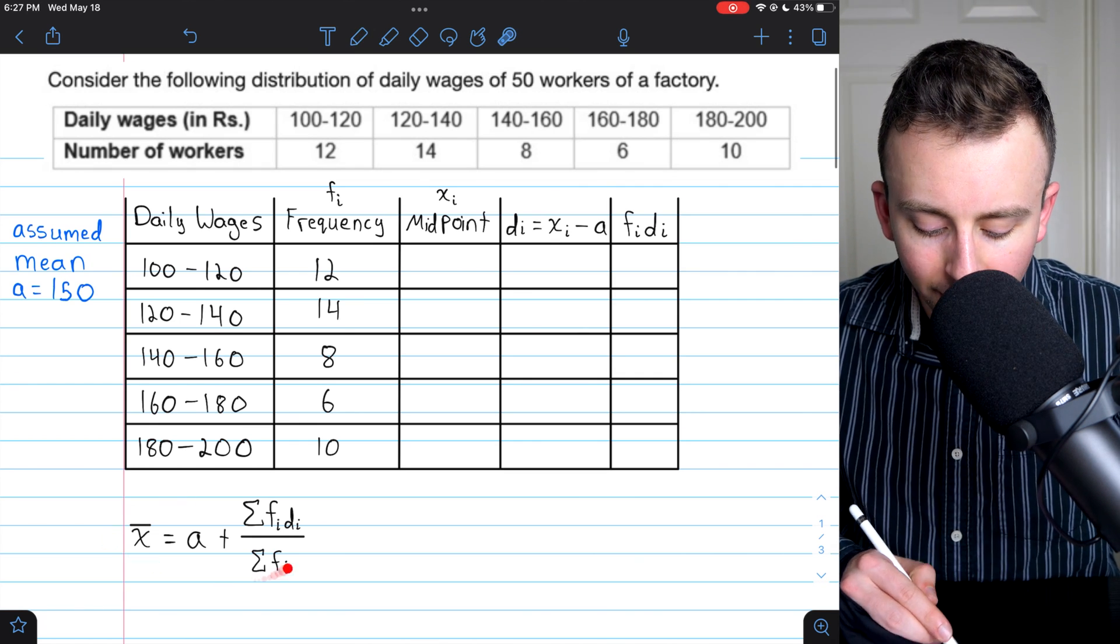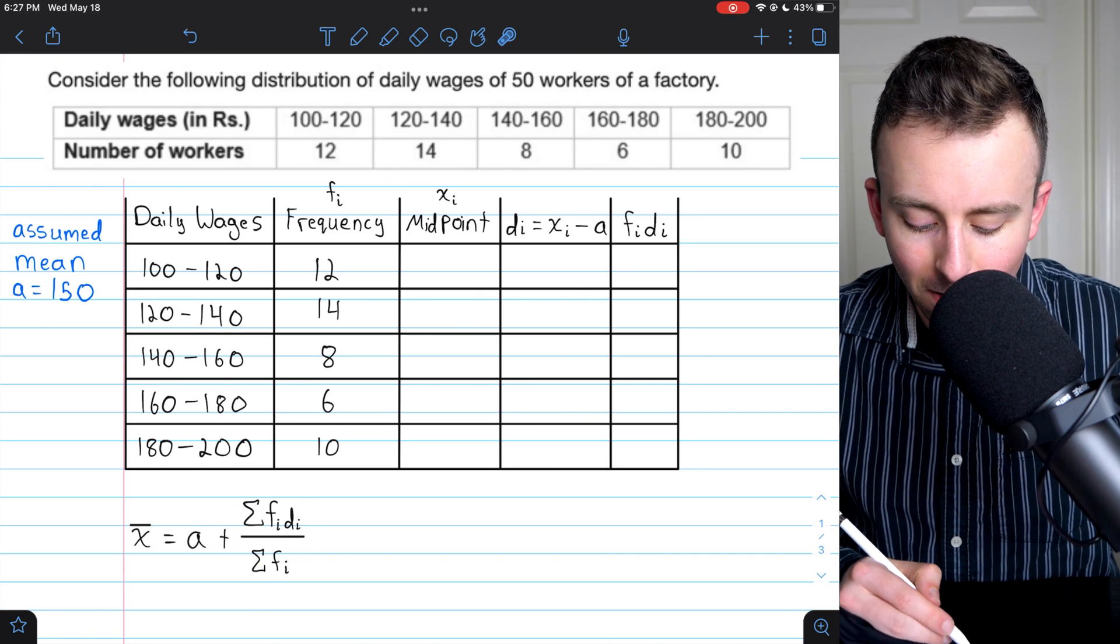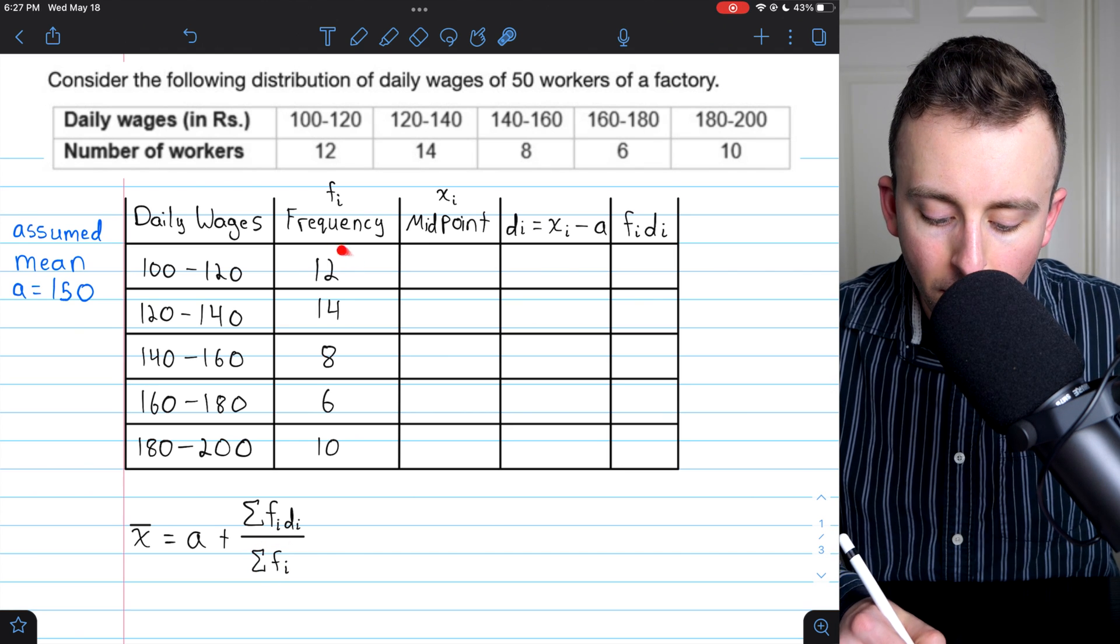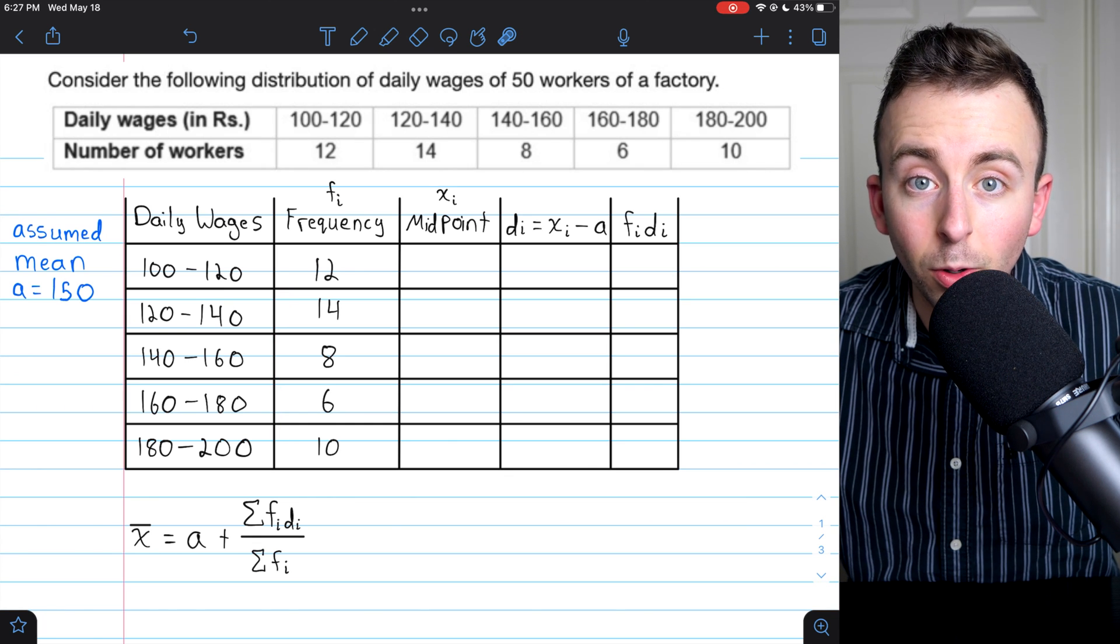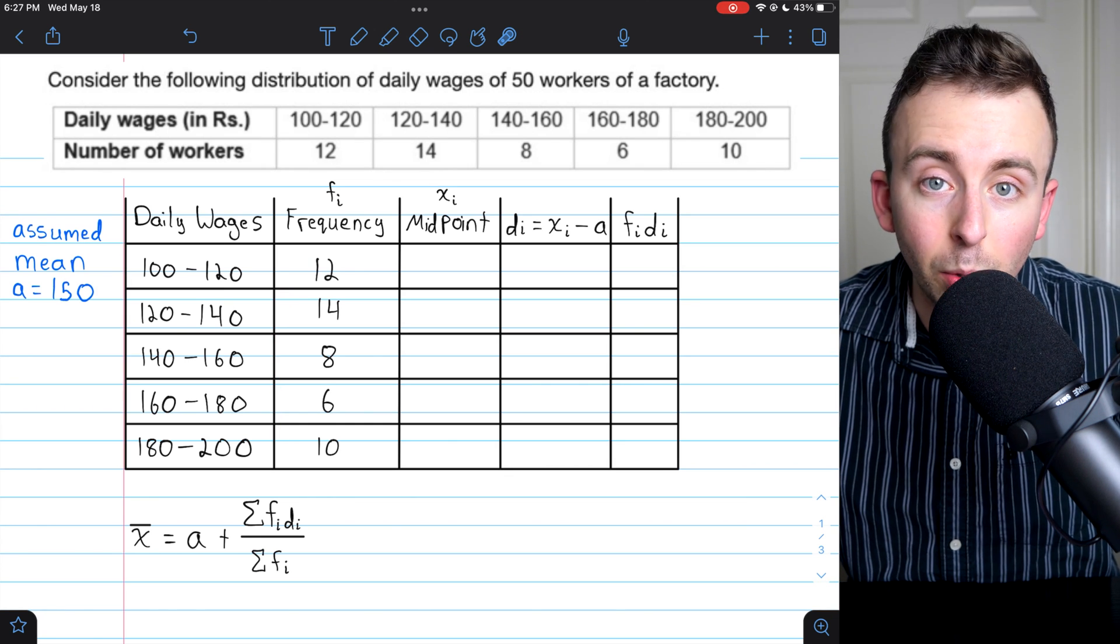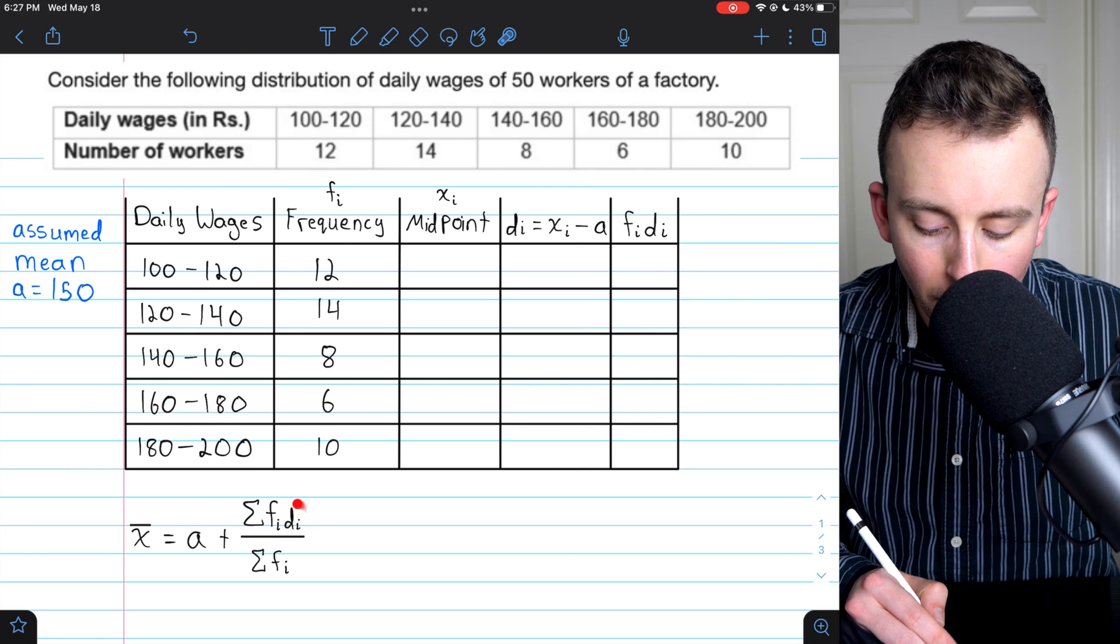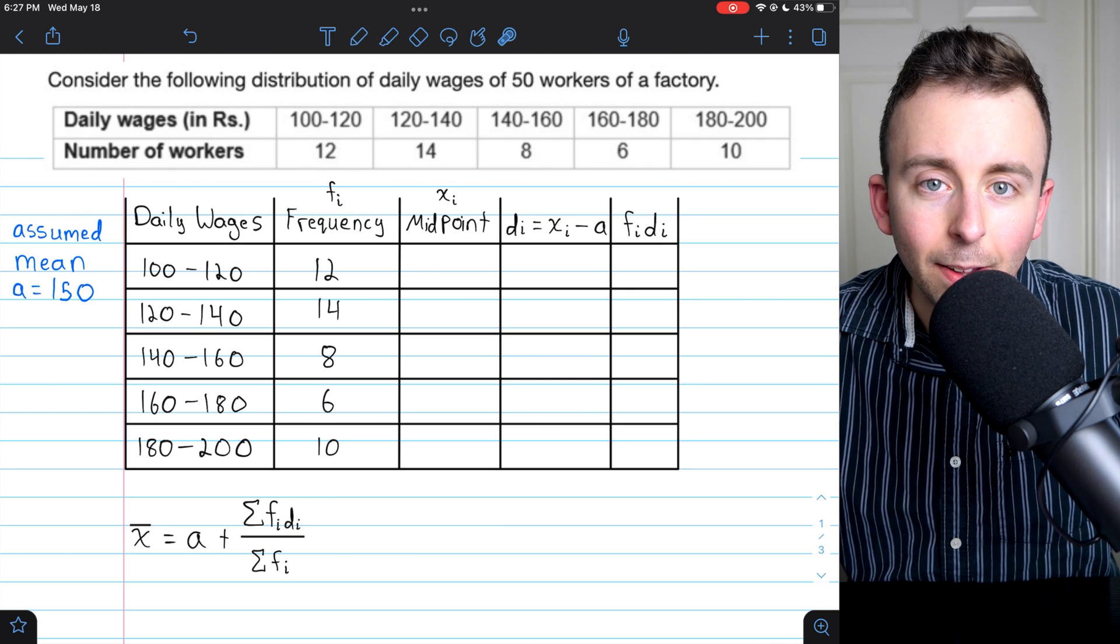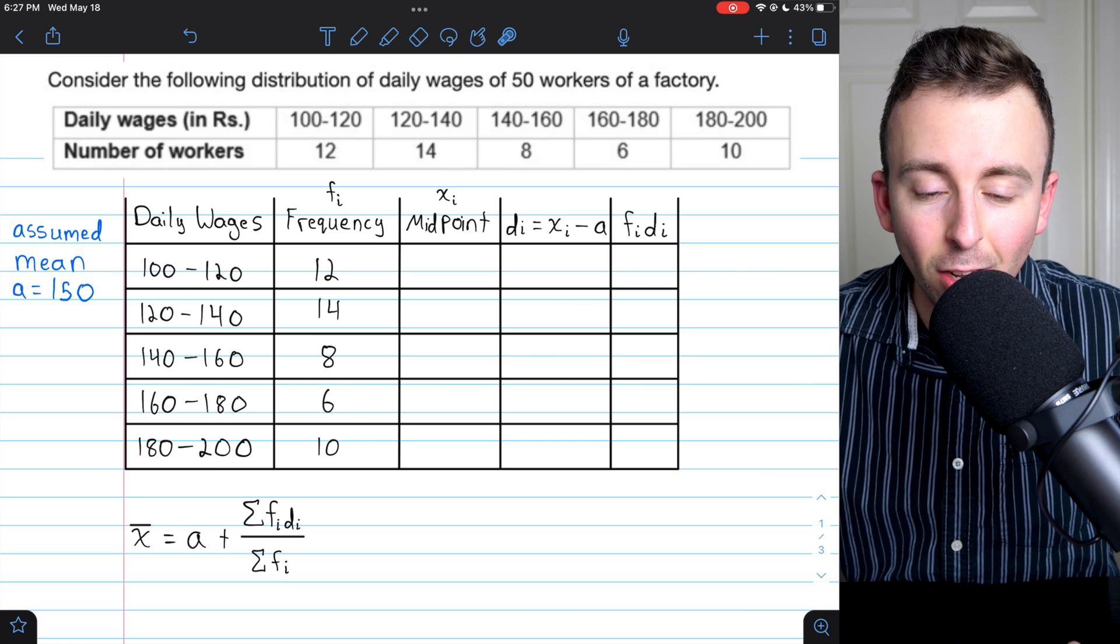This formula tells us that to correct our assumed mean, we just have to add this here. In the denominator of this fraction, we have the sum of the frequencies. And the frequencies were given to us. So we could calculate that right now if we wanted to. In the numerator, we have the sum of frequencies times this thing, di. Now, what is di? Well, that brings us to the final thing we need to discuss before we solve the problem.